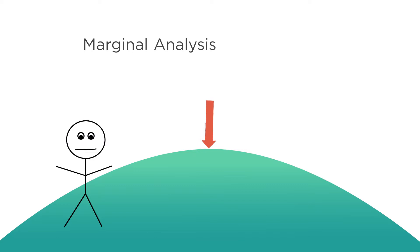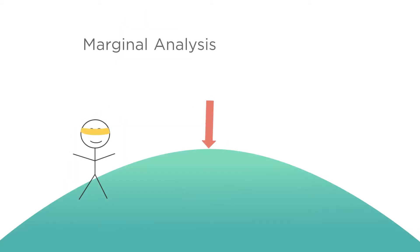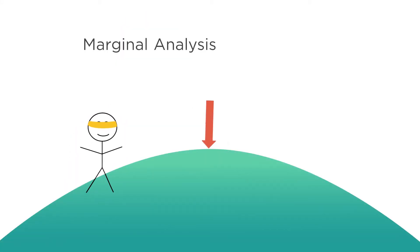If you stick with this strategy long enough, eventually you'll get lucky and be placed at the top. But this could take a long time. So what is a better way? What if I place you at a random spot on the hill and you step forward in some direction? If you feel you're going uphill with that step, then you know you're on the right path and you keep going.